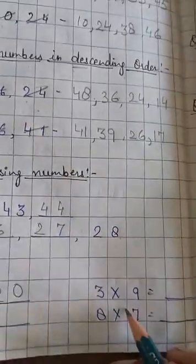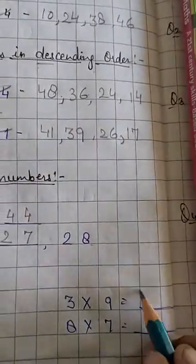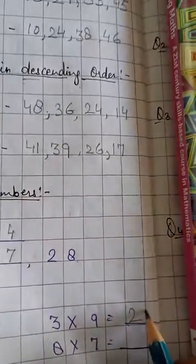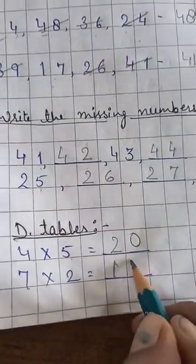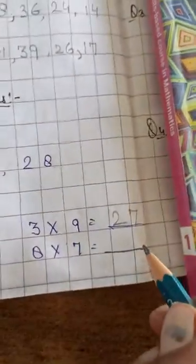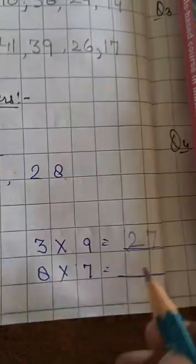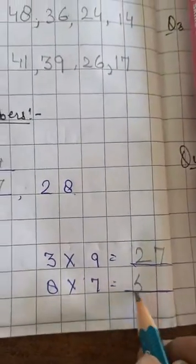3 nines are, yes, 27. 7 twos are, 40. And 8 sevens are, yes, 56.